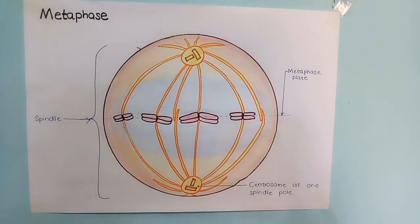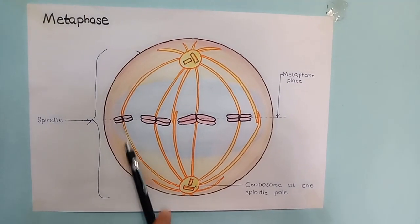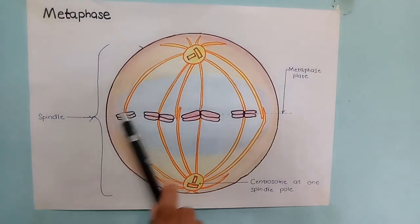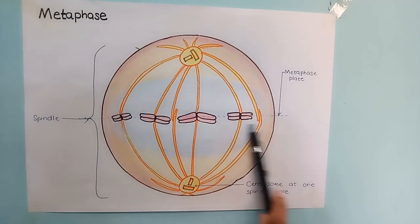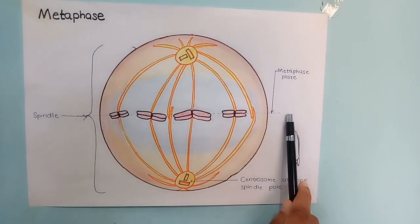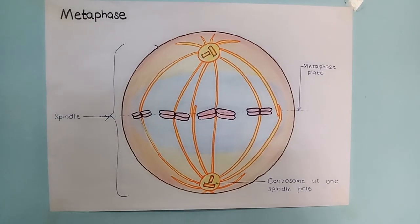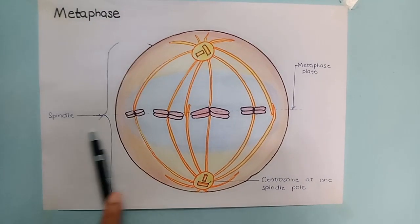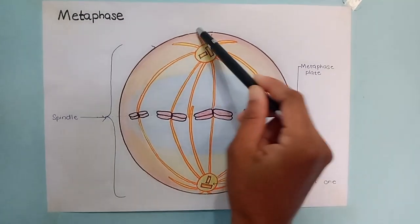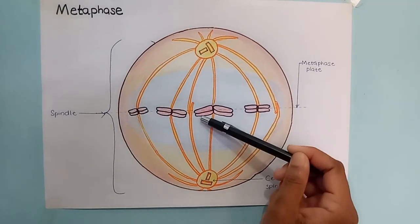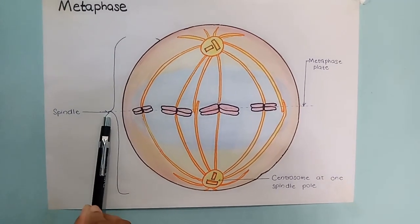After prometaphase, metaphase occurs. In metaphase, the spindle fibers push and pull sister chromatids until they are all arranged at the metaphase plate. The metaphase plate is an imaginary plate equidistant from the poles.